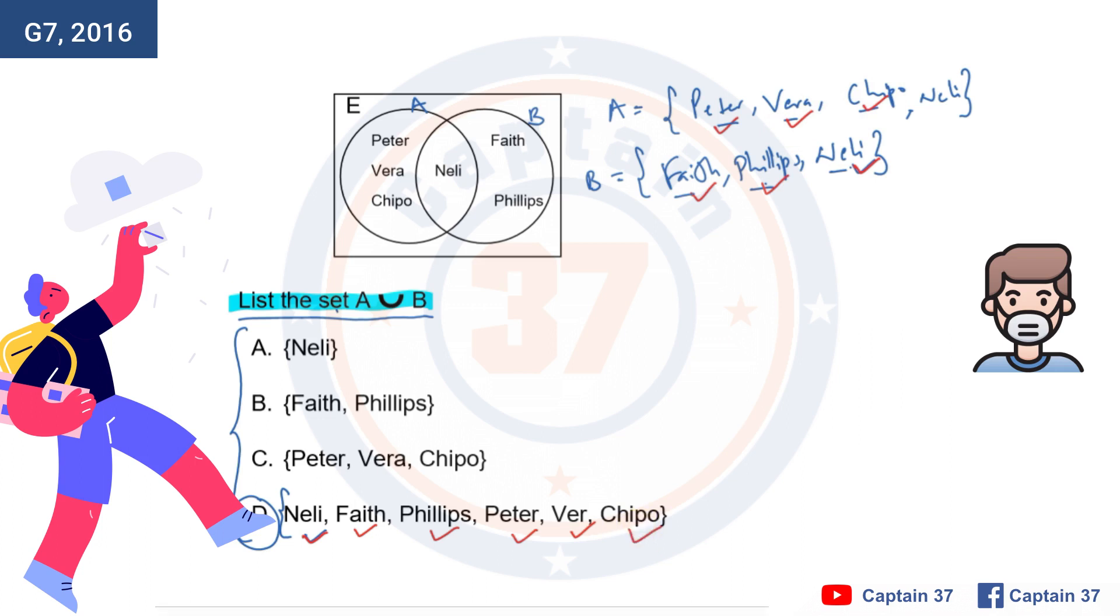And this is how come we conclude that A union B, the set A union B comprises of Nelly, Philip, Nelly, Faith, Phillips, Peter, Vera, and Chippo. The answer to question five is D.